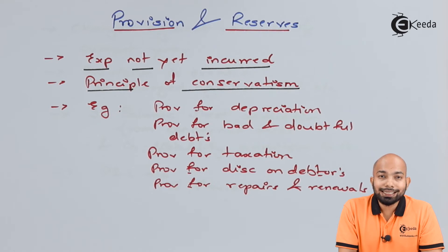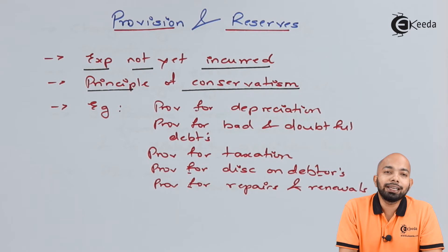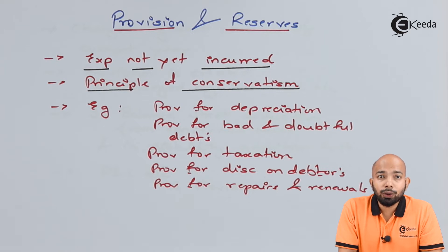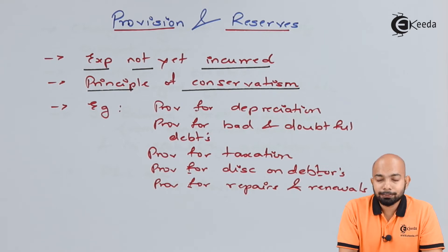Provision is an expense charged against the current year as the first point, and the second point states that the principle of conservatism is directly related to the creation of provision. Now let's go ahead and figure out what the third point is.